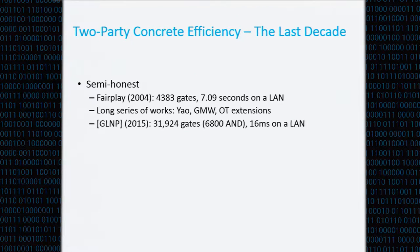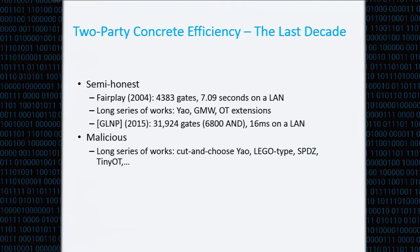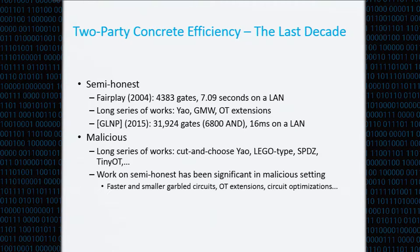In the malicious setting, in the two-party case, there's also been a long series of works, including cut-and-choose Yao and the SPEEDS protocol by Damgård et al. Work in the semi-honest model has been very significant in the malicious setting as well — for example, in the construction of more efficient garbled circuits and other optimizations.